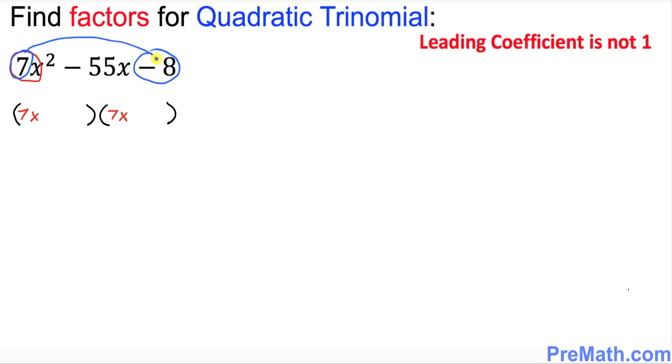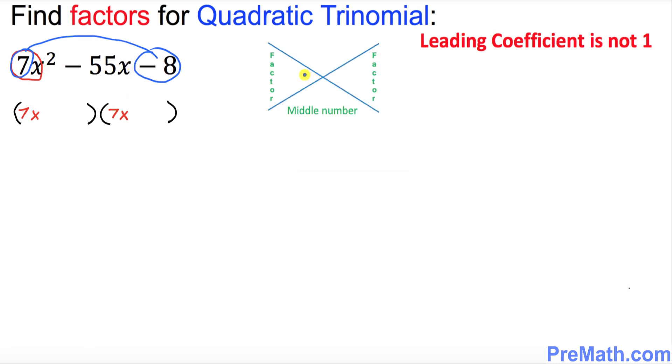7 times negative 8 is going to be negative 56. So I want you to put that negative 56 on the top of this diagram. Put down negative 56 and look at this middle number which is negative 55. Put this one right up here at the bottom.